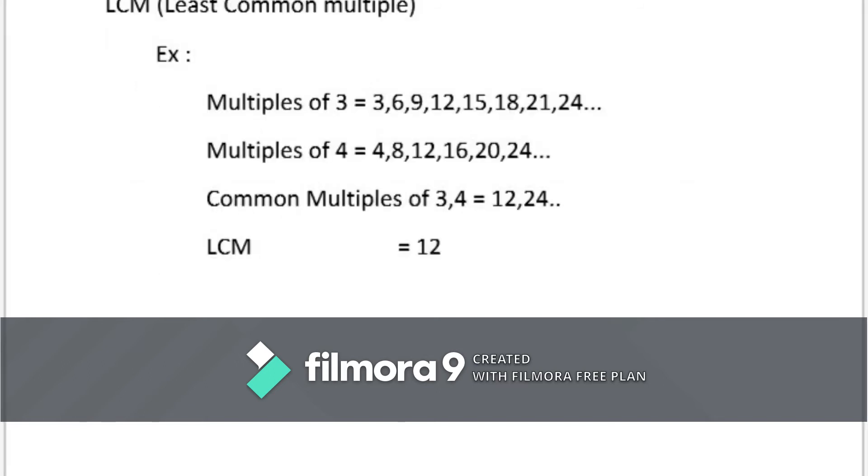Next, we will see about least common multiples. Least common multiple of 2 numbers is the smallest number that is a multiple of both.